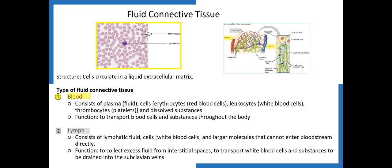The last type of connective tissue is fluid connective tissue. There are two types: blood, which flows within blood vessels (arteries, veins, capillaries), and lymphatic fluid, which is found within the lymphatic system. The vascular system and the lymphatic system are very interwoven — lymphatic capillaries are located in the same general regions as blood capillaries. We will cover fluid connective tissue in more detail in the relevant sections of this course.